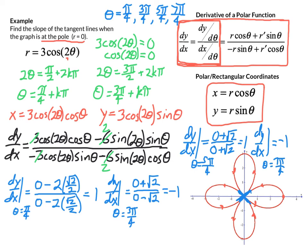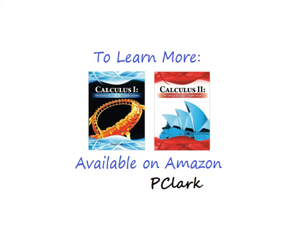That's a nice example of finding tangent line slopes at the pole. There are a couple of phases: first, determine when the graph is at the pole by solving r = 0; then find the derivative using the polar definition of dy/dx — either using the formula or by defining x and y parametrically and doing a parametric derivative; and finally evaluate that derivative at the various values of theta where you cross the pole. If you'd like to learn more about the calculus of polar functions, you can find those on my textbooks available on Amazon. Don't forget to subscribe to the channel, and until next time, I'm Pete Clark.